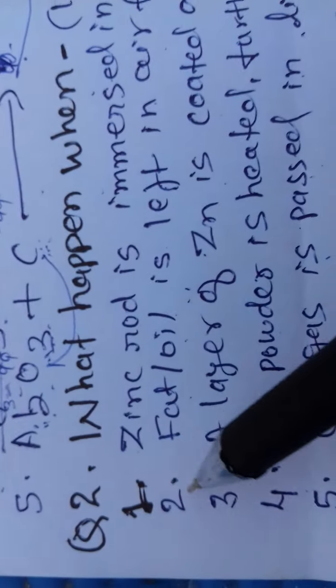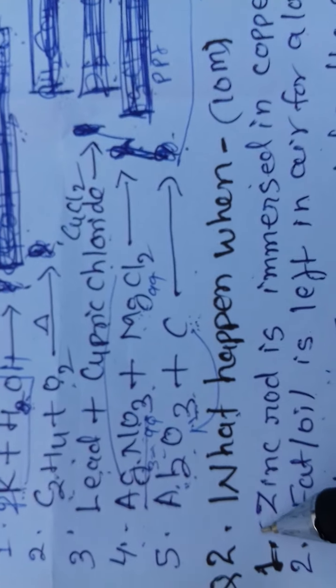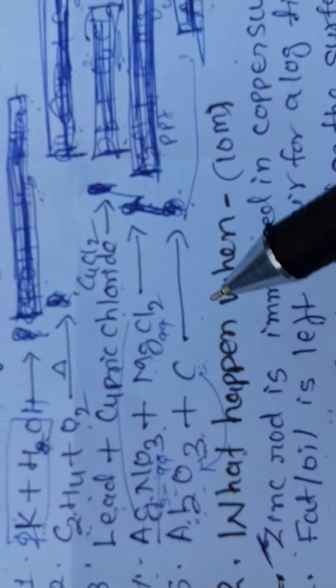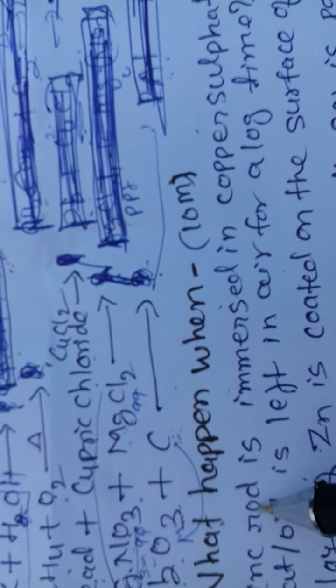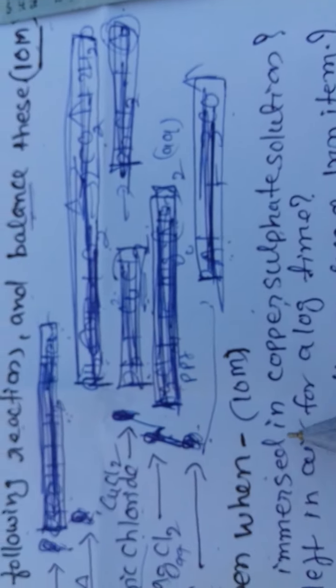Question number 2: What happened when? 10 marks, there are total 5 questions, 2 marks each. Means 1 mark for heading - heading means heading the term - and second for explanation. First means zinc rod is immersed in copper sulphate solution. So what happened?